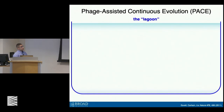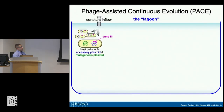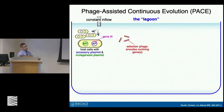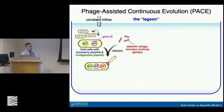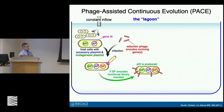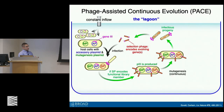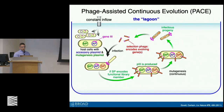Putting this all together is what we describe as PACE — phage-assisted continuous evolution. All of these steps take place in what we call the lagoon. In this lagoon, we have a constant outflow of engineered E. coli cells that bear this accessory plasmid in addition to a mutagenesis plasmid, which enhances the diversification during the course of the selection. We initiate one of these PACE experiments by infecting these bacterial cells with selection phage that have been engineered to encode the evolving gene or genes of interest. If the selection phage encodes a functional library member, P3 is produced, which results in infectious progeny that can undergo continuous cycles of this process.